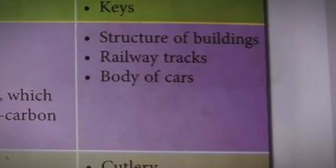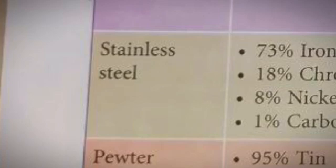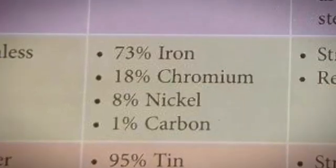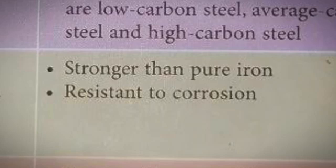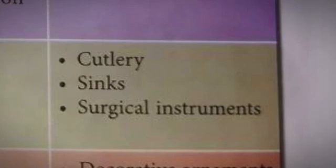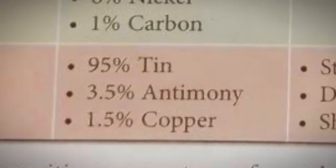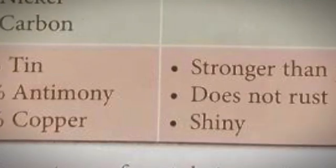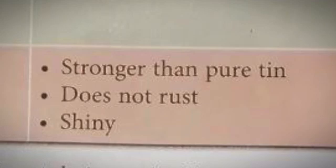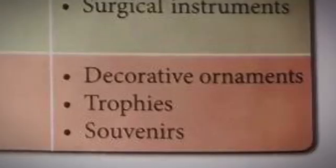Stainless steel is made up of 70% iron, 18% chromium, 8% nickel, and 1% carbon. It is stronger than pure iron and resistant to corrosion. This alloy is used to make cutlery, sinks, and surgical instruments. Lastly, pewter consists of 95% tin, 3.5% antimony, and 1.5% copper. It is stronger than pure tin, does not rust, and is shiny. Pewter is used to make decorative ornaments, trophies, and souvenirs.